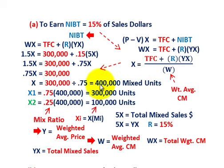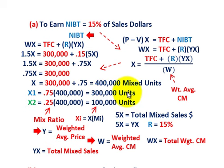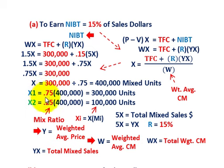Now we proportion the 400,000 total mixed units between X1 and X2 using the mix ratios. For product X1: mix ratio 0.75 × 400,000 = 300,000 units. For product X2: mix ratio 0.25 × 400,000 = 100,000 units. So based on net income before taxes of 15% of sales dollars, we need to sell 300,000 units of X1 and 100,000 units of X2. Each individual quantity is simply the total mixed units times the respective mix ratio.